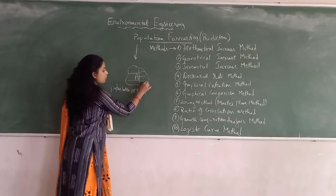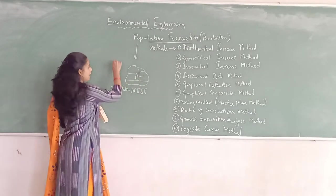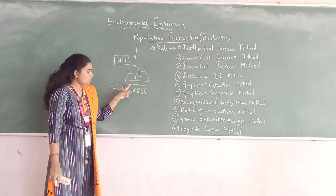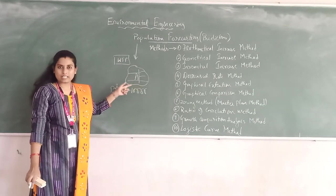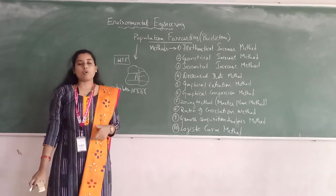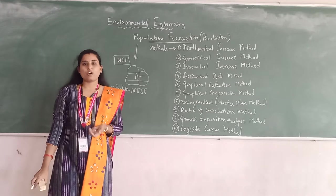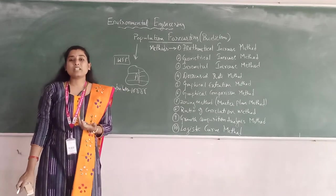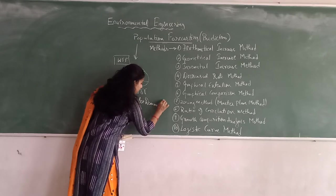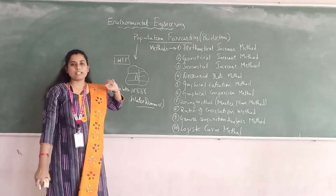I have to decide the water distribution system. I have to lay the water pipelines in this city, and also I have to design a water treatment plan and a water supply scheme. Now this population of the city is 10,000. To design a water supply scheme for any area or city, I should be aware of what quantity of water I have to send to the public per day — that is, what is the water demand of this area.